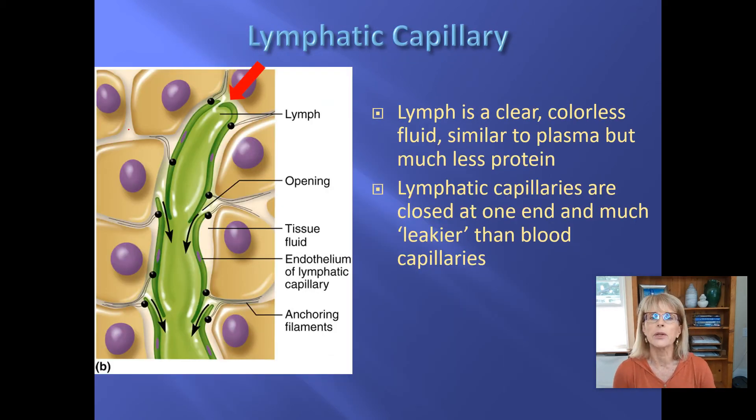So the lymphatic capillary—this stuff that's in a lymphatic capillary is called lymph. It's clear, it's colorless, it's similar to plasma, it's just missing the big proteins albumin and fibrinogen. Otherwise, it's really similar. These lymphatic capillaries are kind of leaky, so when the pressure is higher here than it is in here, lymph will go in and head back on its way towards the heart.